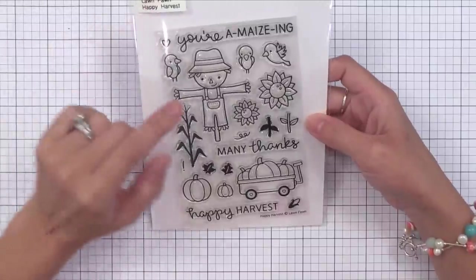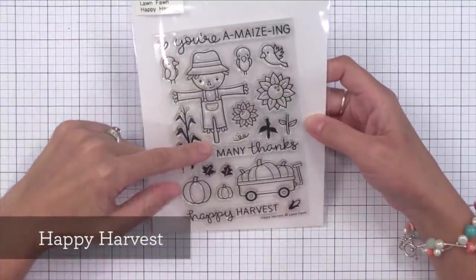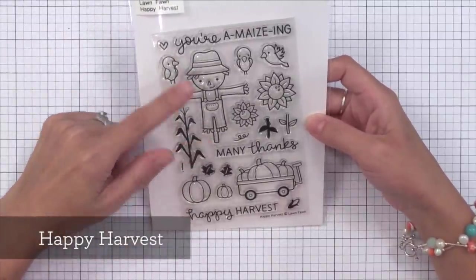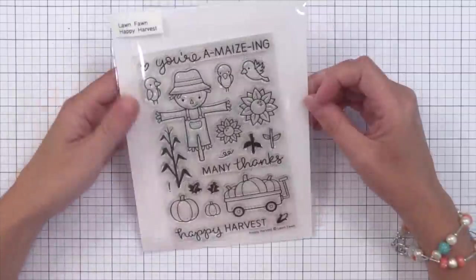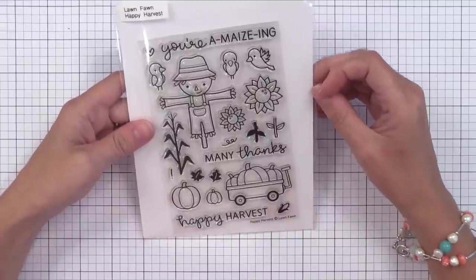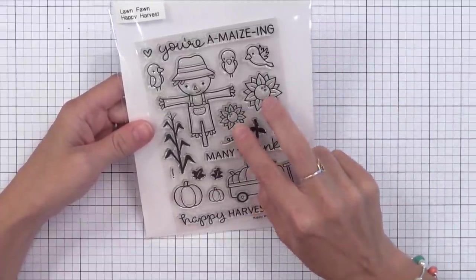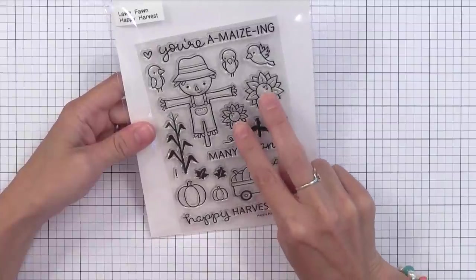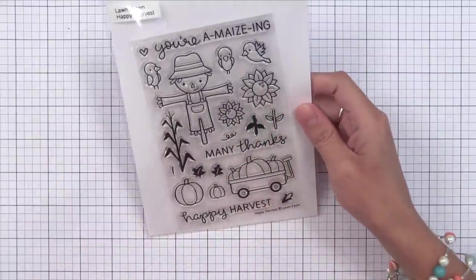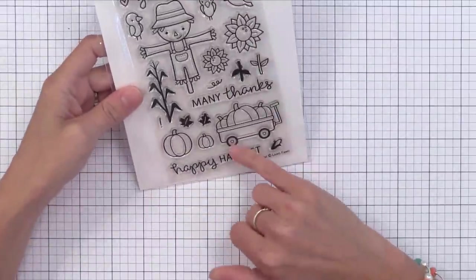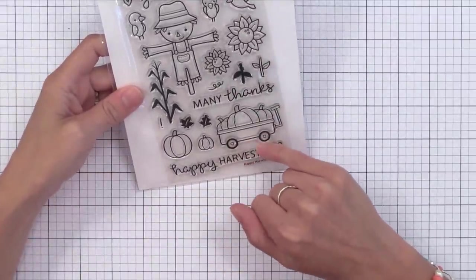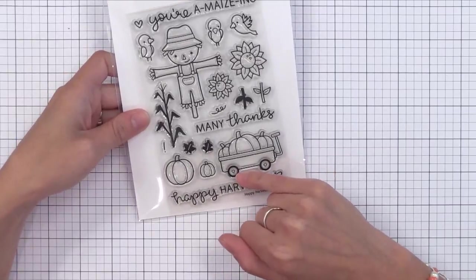Now we have Happy Harvest. Just some fun adorable images here. I think you'll see this one being used a lot on the internet too. I really like those sunflowers. There's this small and large sunflower and I think it'd be fun to stamp that repeatedly in a pattern on the back of a card. I also think it'd be fun to take that little wagon with the pumpkins and have a little critter kind of pulling it across a card. Lawn Fawn does a really good job at making sure that you can use all of their stamp sets together in fun and creative ways.